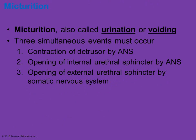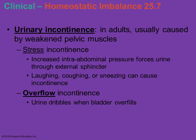Urination, or voiding, requires three different events. First, the detrusor muscle must contract. Then the internal urethral sphincter must open up — both of those are involuntary. Then the voluntary muscle, the external urethral sphincter, is the last one that must open up to allow for the passage of urine. Stress incontinence involves increased pressure in the abdomen — such as from coughing, laughing, or sneezing — that tends to force the urine through the external sphincter.